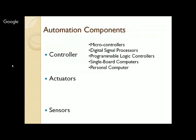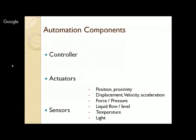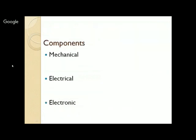Controllers can be of various types: microcontrollers, digital signal processors, programmable logic controllers, single board computers, or personal computers. Actuators may be based on electrical energy or may be fluid power actuators. Sensors measure many types of parameters: position, proximity, displacement, velocity, acceleration, force, pressure, liquid flow, level, temperature, light, humidity, gas composition, and more. An automation system thus consists of mechanical, electrical, electronics, and software components.